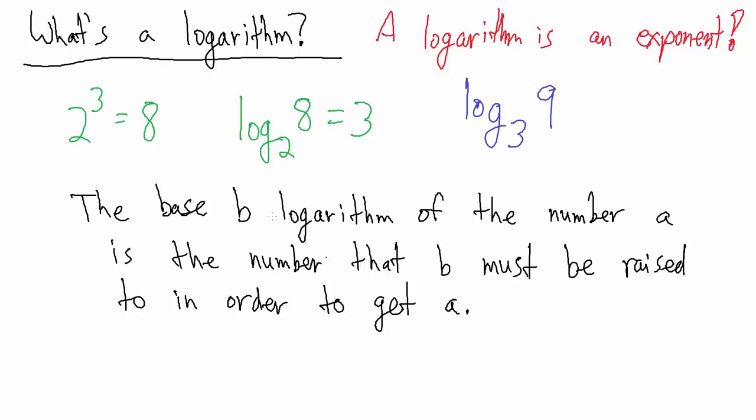So now let's use this interpretation with this example here. So if we want to evaluate the base 3 log of 9, well here B is now 3, A is now 9. So the base 3 logarithm of the number 9 is the number that 3 must be raised to in order to get 9. What number must 3 be raised to in order to get 9?